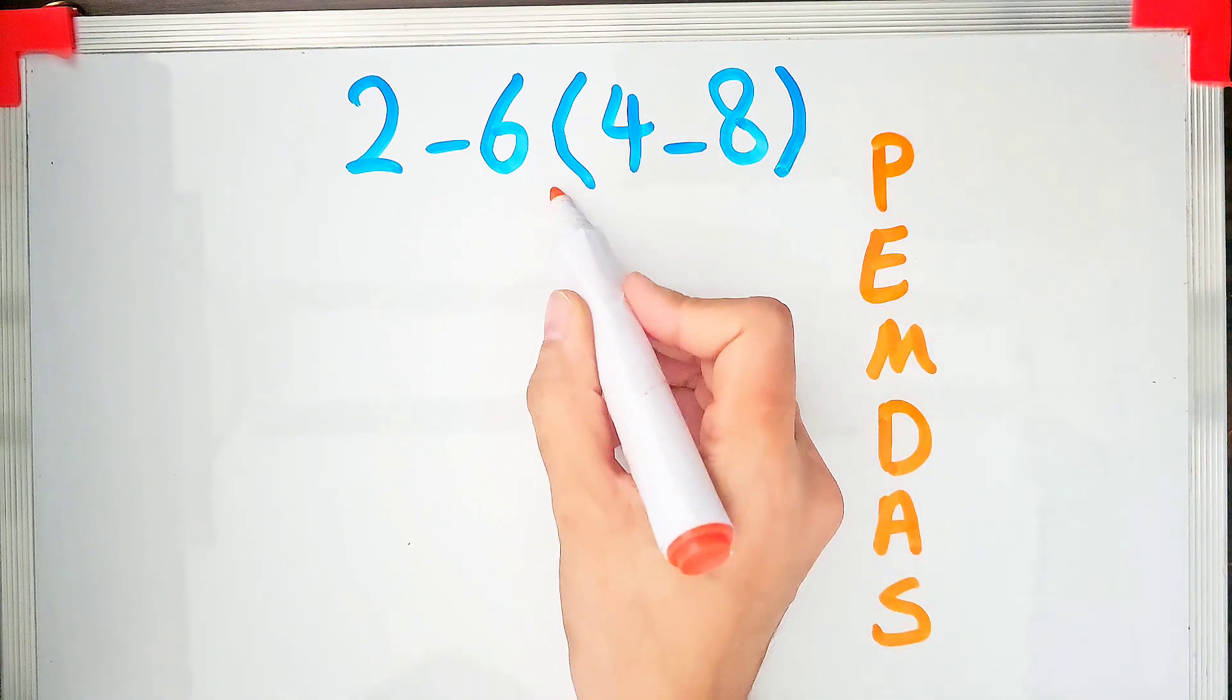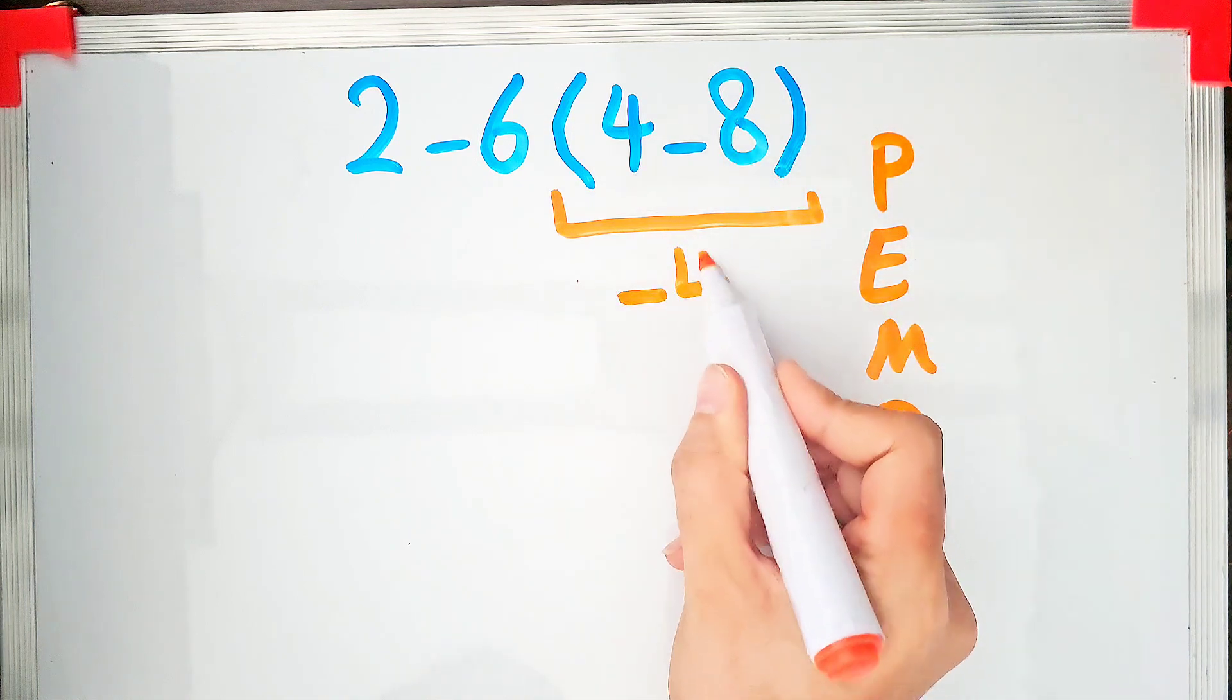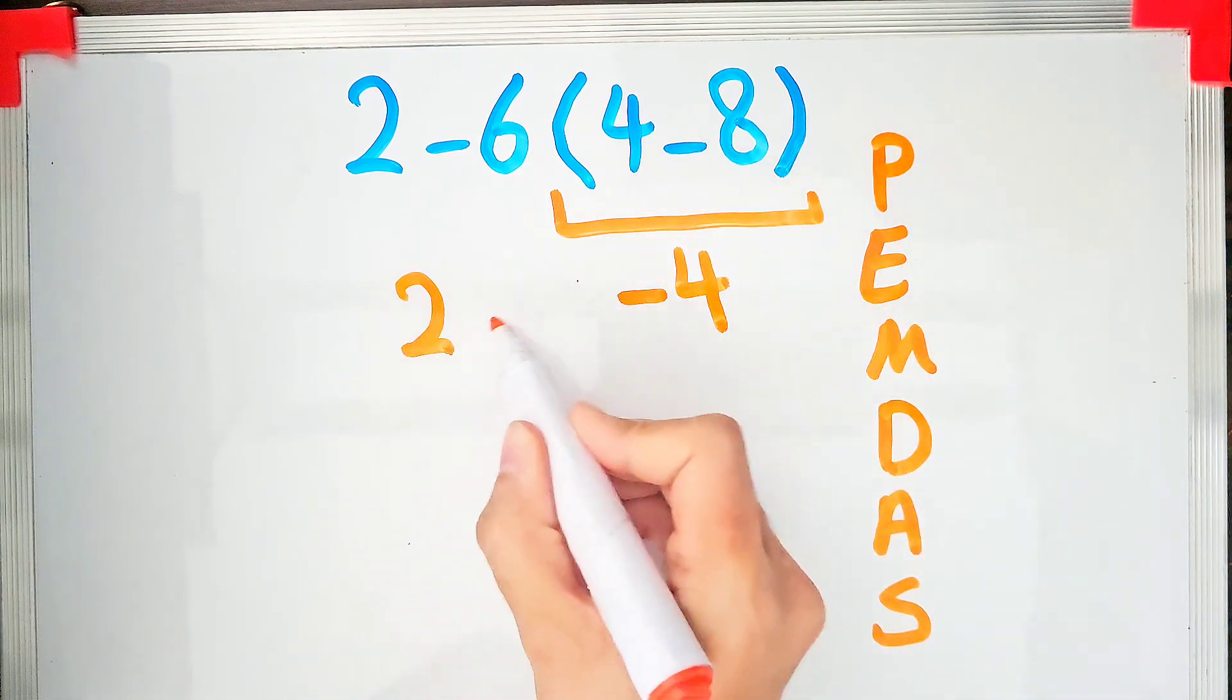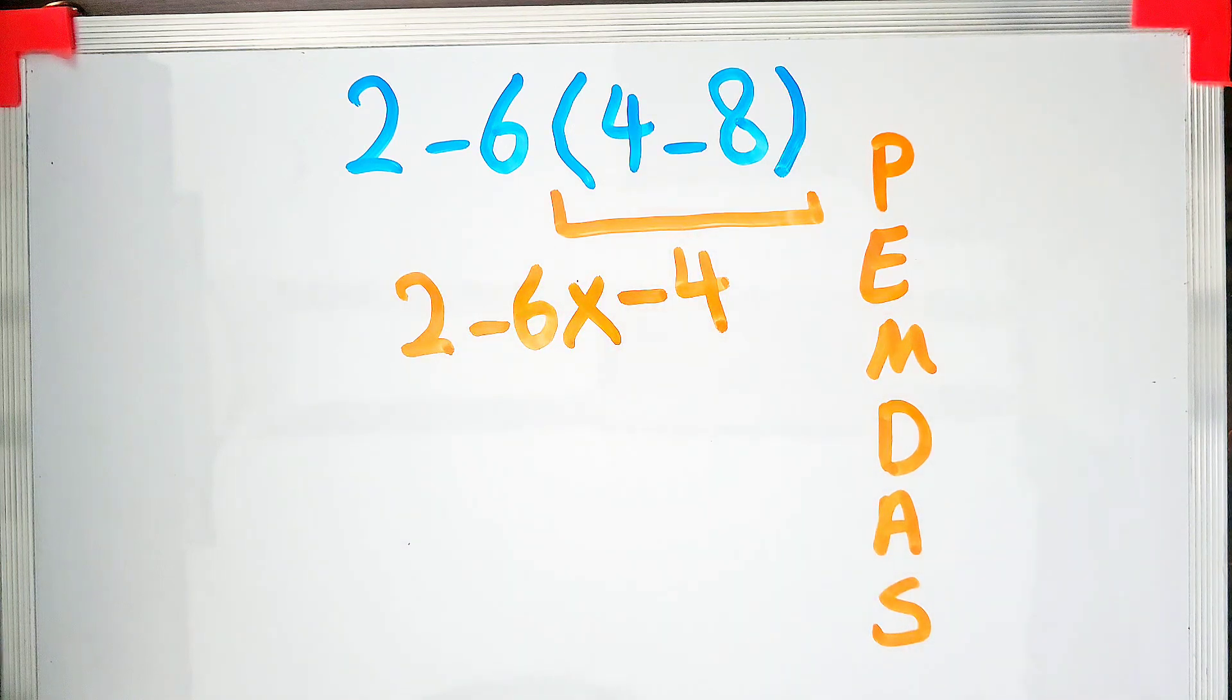Okay guys, let's solve this question and simplify the parentheses. 4 minus 8 equals negative 4. Now we have a new expression: 2 minus 6 times negative 4.